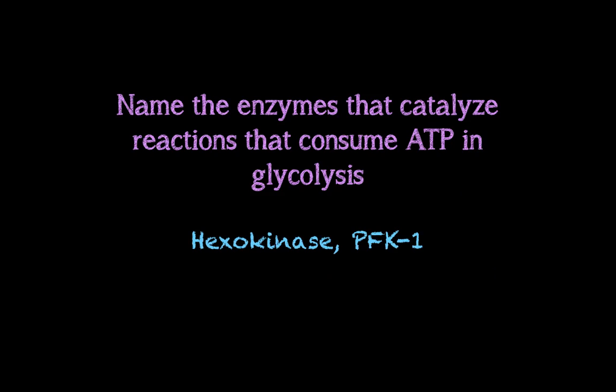I hope you only had two enzymes. The answer is hexokinase and phosphofructokinase 1. If you look at the names of these two enzymes, they have something in common — the word 'kinase.' A kinase enzyme is an enzyme that will phosphorylate, or in other words add phosphate to, a substrate molecule, and the source of that phosphate comes from ATP. So hexokinase and phosphofructokinase 1 are the two enzymes that catalyze reactions consuming ATP in glycolysis.